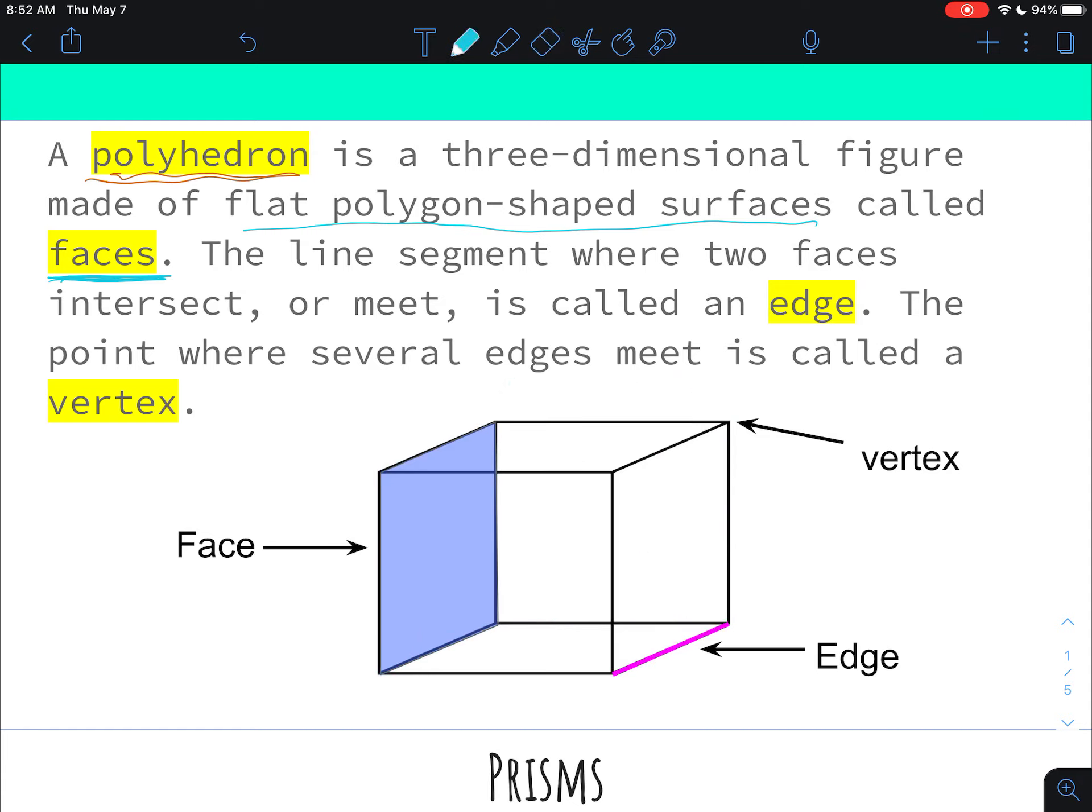So then another vocabulary word is the edges. The edges are the line segment where two faces intersect or meet. I have unlabeled in pink down here, so let's stay with that pink theme. So this is an edge because this face and this face meet right here and it makes an edge. So if I wanted to go and count all the edges, this is the tricky one because you can't overlap. So if I have one, two, three, four, five, six, seven, eight, nine, ten, eleven edges.